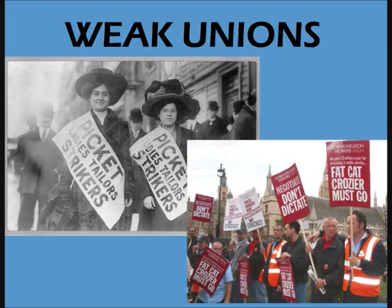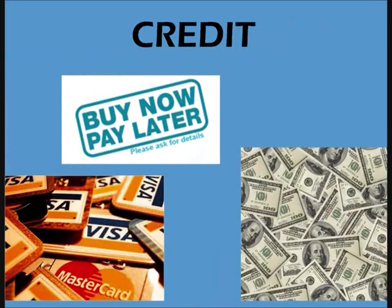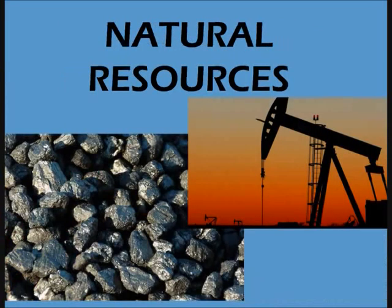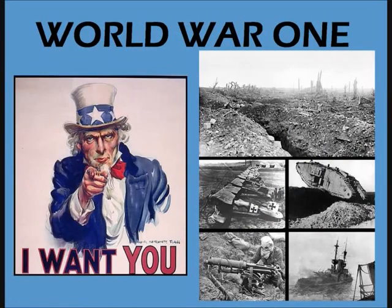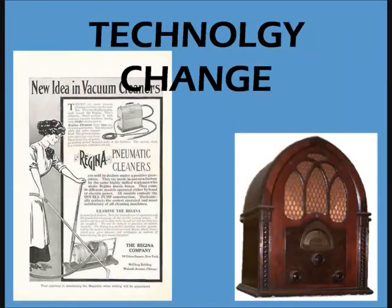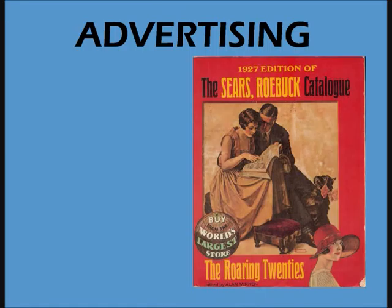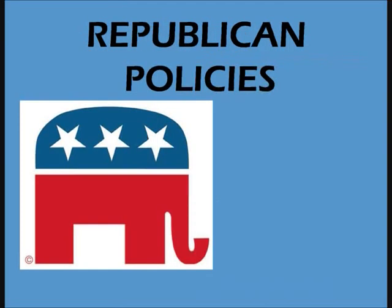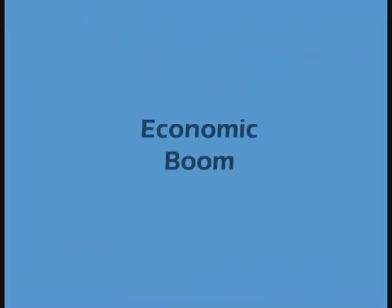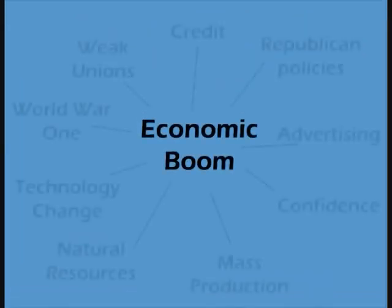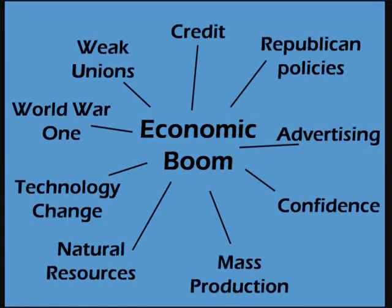There are nine key factors that explain the economic boom in America in the 1920s. These are weak unions, credit, natural resources, confidence, World War I, technology change, mass production, advertising and republican policies. You won't need to write about them all in detail, but it is important you understand them thoroughly.